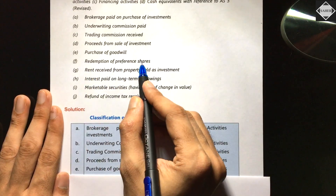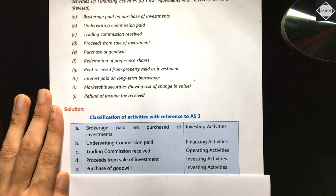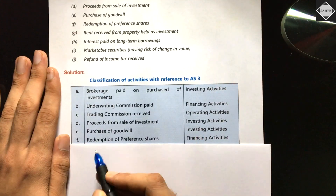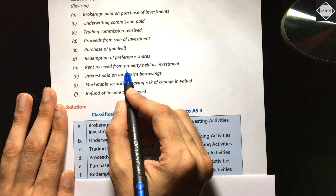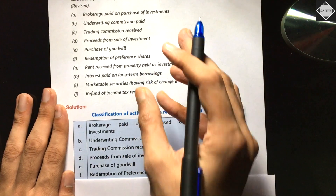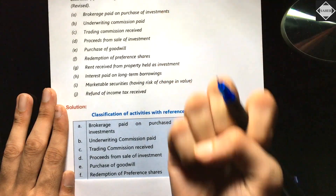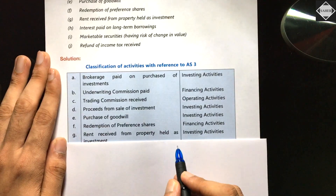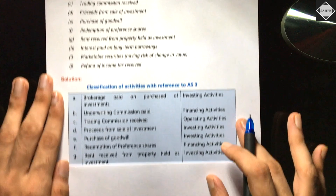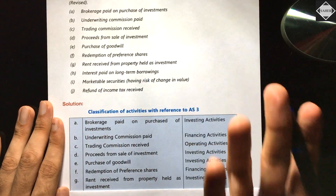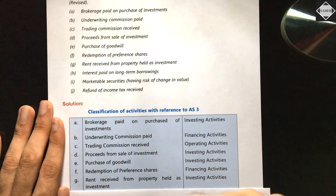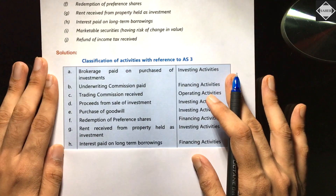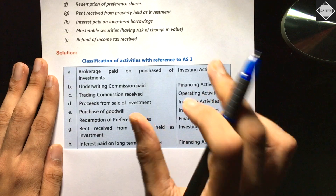Rent received from property held as investment: since the property is held as an investment and we're receiving rent, this is an investing cash inflow. Interest paid on long-term borrowings — for example, interest paid to debenture holders — is a financing cash outflow.